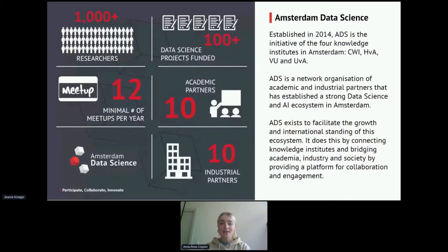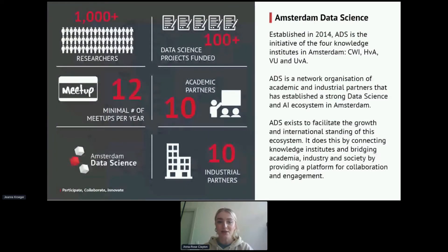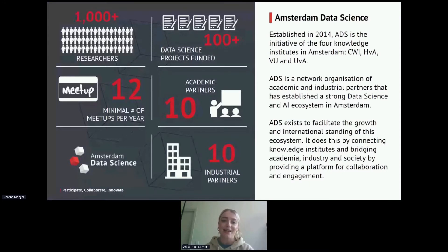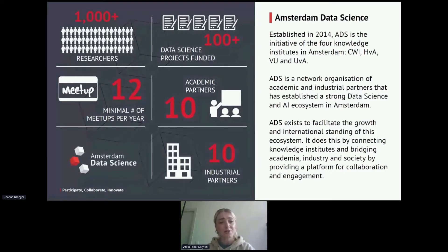Let me give some more introduction about Amsterdam Data Science and what we do. We were established in 2014. ADS is an initiative of four knowledge institutes. ADS is a network organization of academic and industrial partners that has established a strong data science and AI ecosystem in Amsterdam. Amsterdam Data Science exists to facilitate the growth and international standing of this ecosystem, by connecting knowledge institutes and bringing academia, industry, and society together by providing a platform for collaboration and engagement.